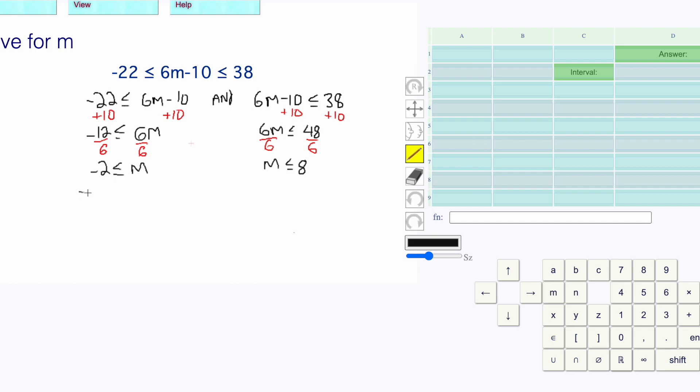I'm going to make two number lines. m is greater than or equal to negative 2. I'm going to put a solid dot on my negative 2 and we're going to the right. m is less than or equal to 8. I'm putting a solid dot.